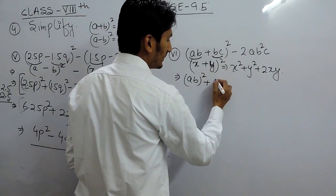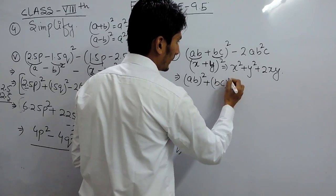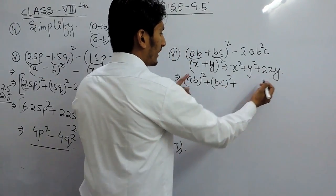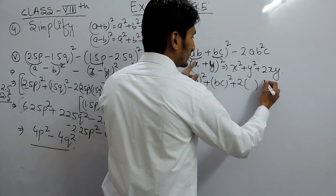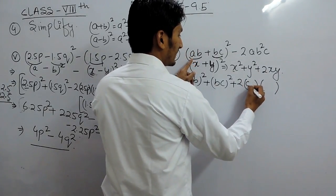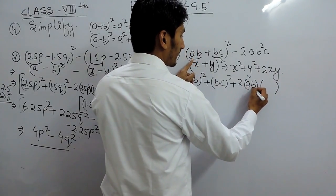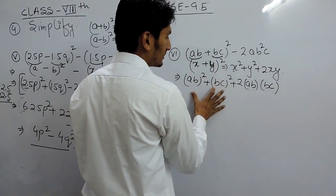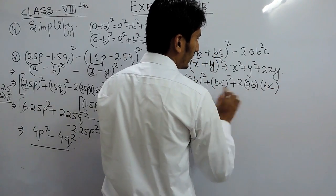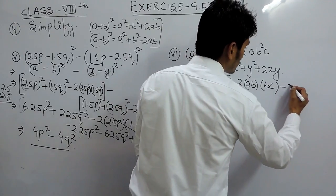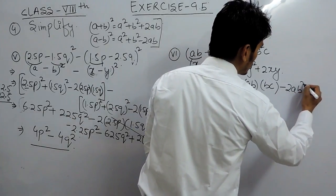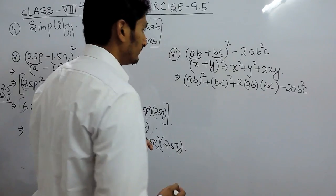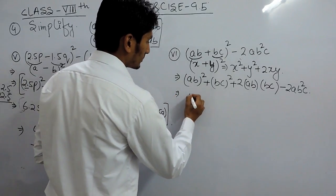So this is (ab)² plus y² where y is bc, so this is (bc)², plus 2 × x × y which is 2 × ab × bc. I have expanded this using the formula, and the remaining term, which is −2ab²c, will stay as it is.